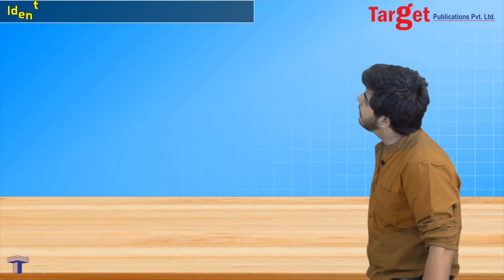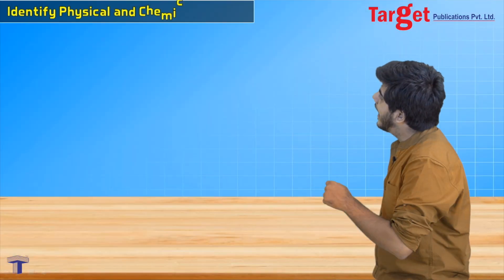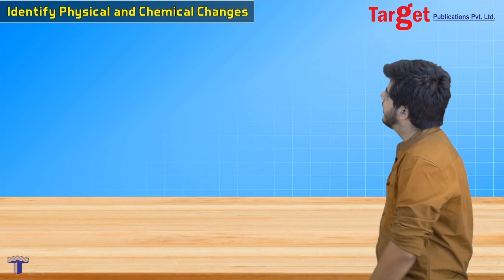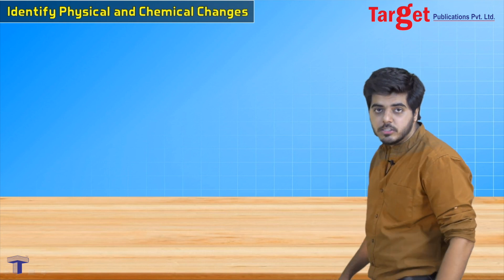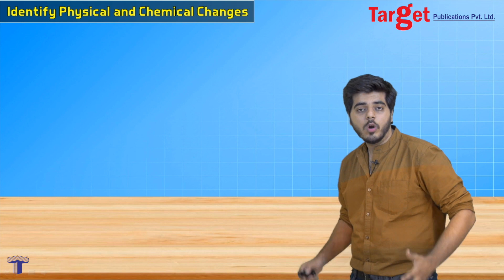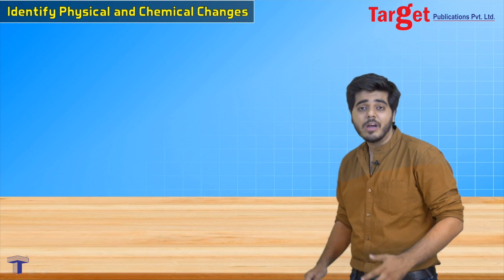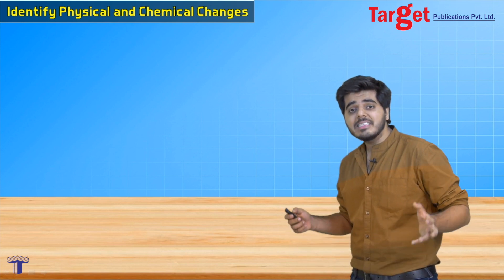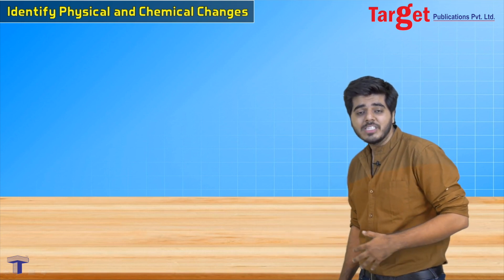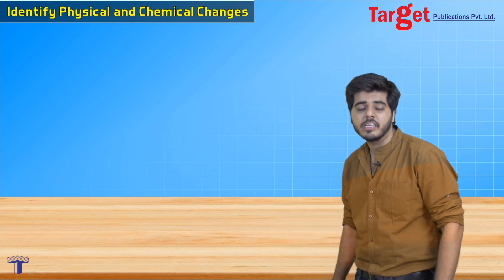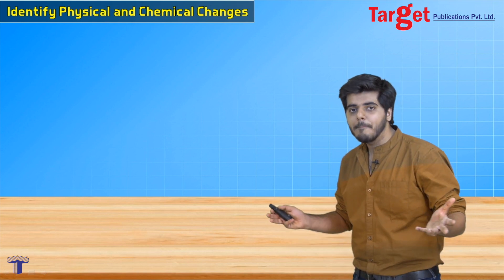Hello everyone. Today we are going to learn about identifying physical and chemical changes. To identify physical and chemical change, we are going to take five cases and see in which experiment we are getting a physical change or a chemical change.